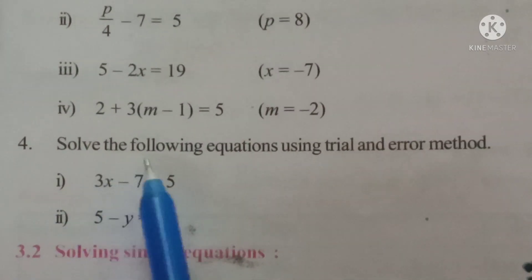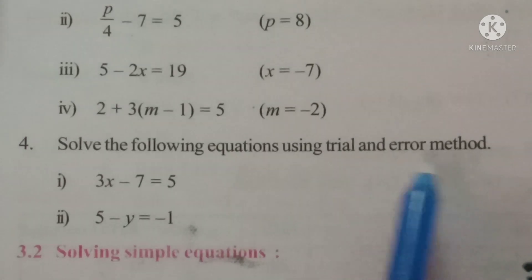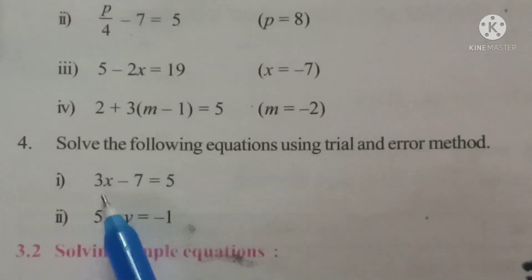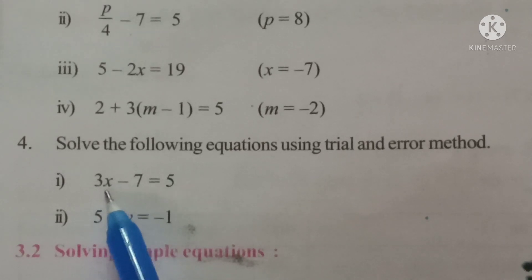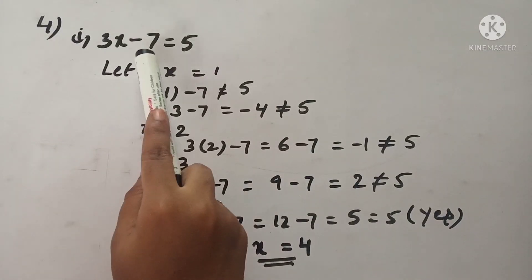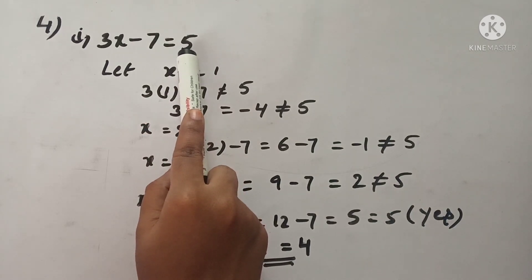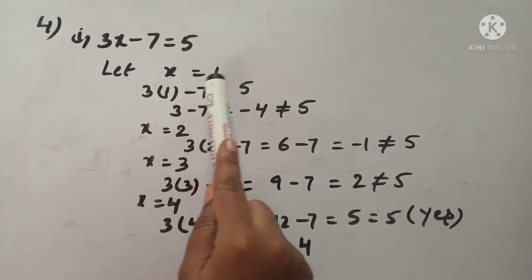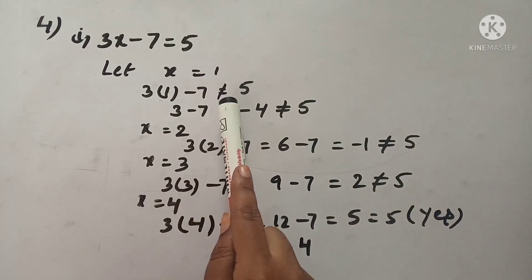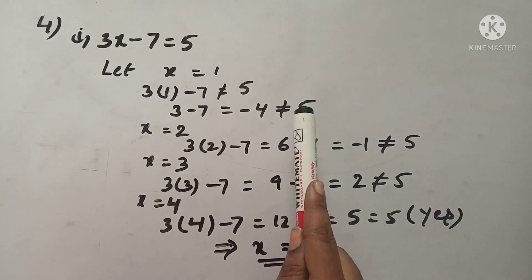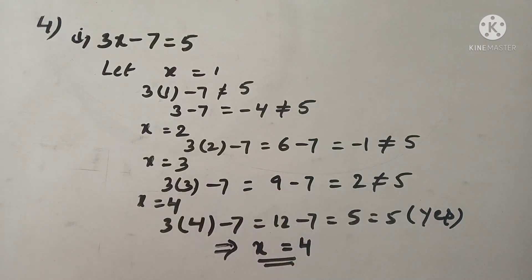See the fourth question: solve the following equations using trial and error method. Some equations are given and we solve them by substituting values for x until one satisfies the equation. See the first question: 3x minus 7 is equal to 5. Substitute x equals 1: 3 minus 7 is minus 4, not equal to 5. Substitute x equals 2: 6 minus 7 is minus 1, not equal to 5. So this is also not the solution.